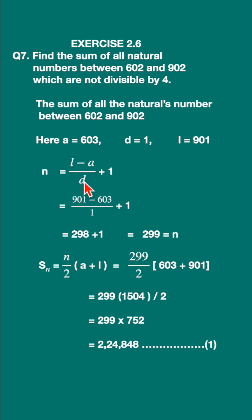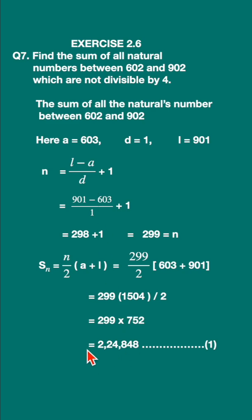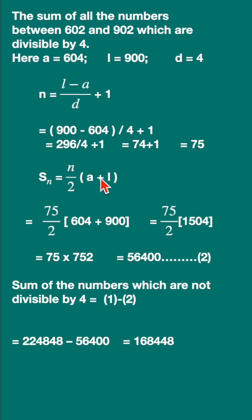With this, find out the number of terms n using the formula, then find the sum of these terms. Substitute the last term, the first term, and simplify. This is the total sum of all the integers between these two numbers.